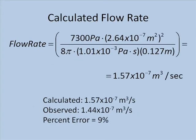Let's see how our observed flow rate compares to the flow rate we find using Poiseuille's law. To use Poiseuille's law, we need to know the pressure on the fluid, which we've already determined to be 7,300 pascals.